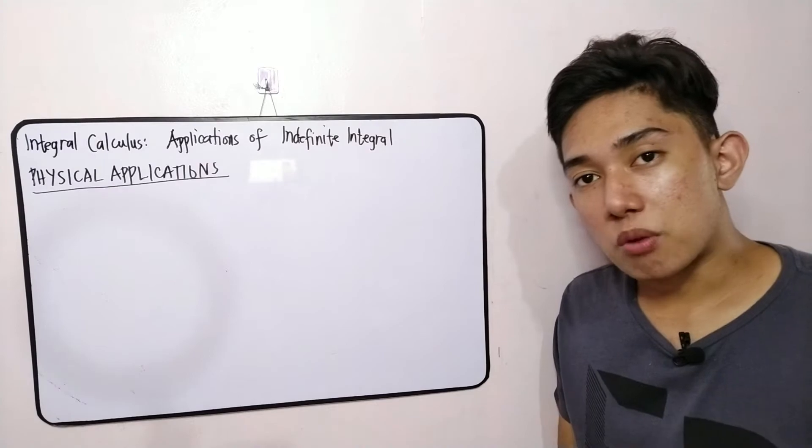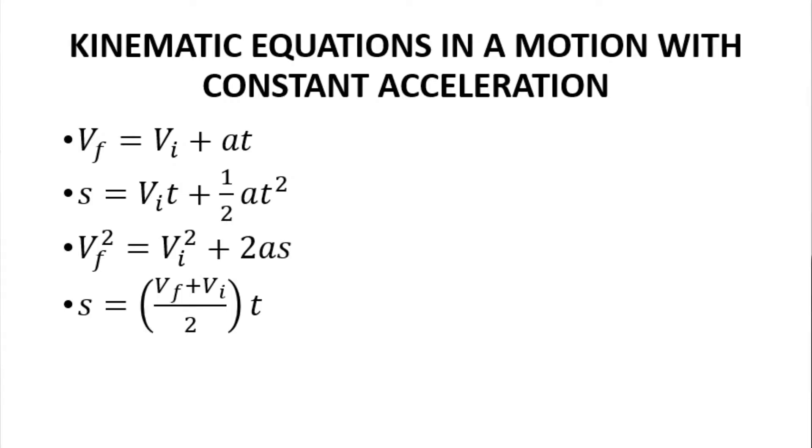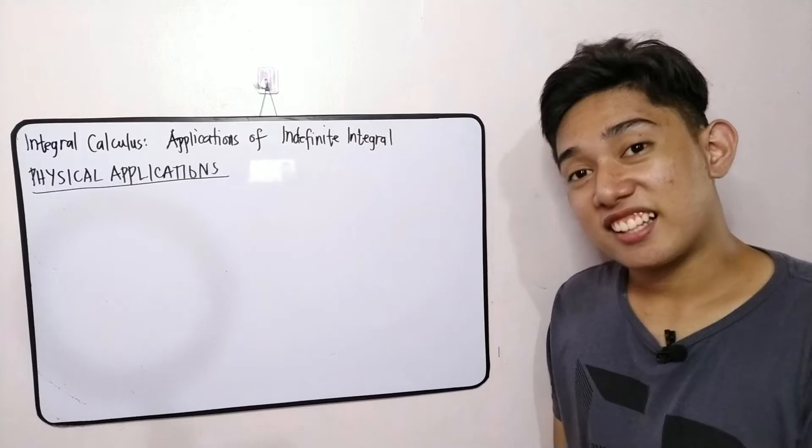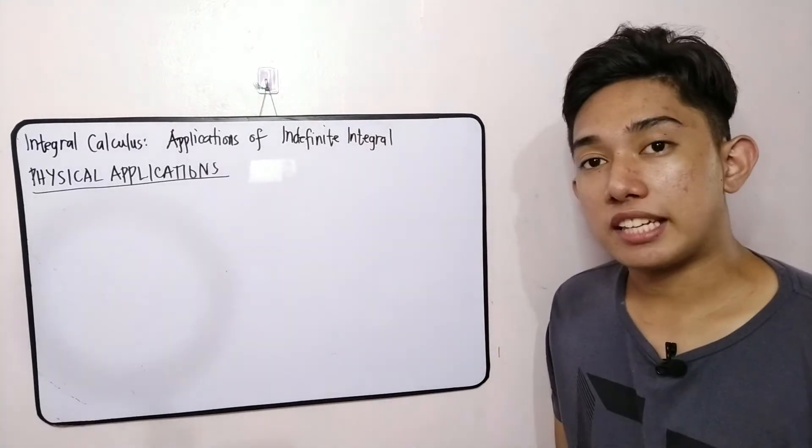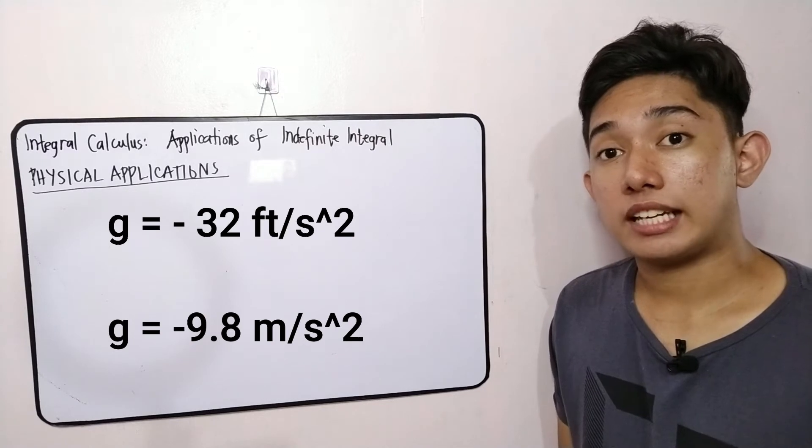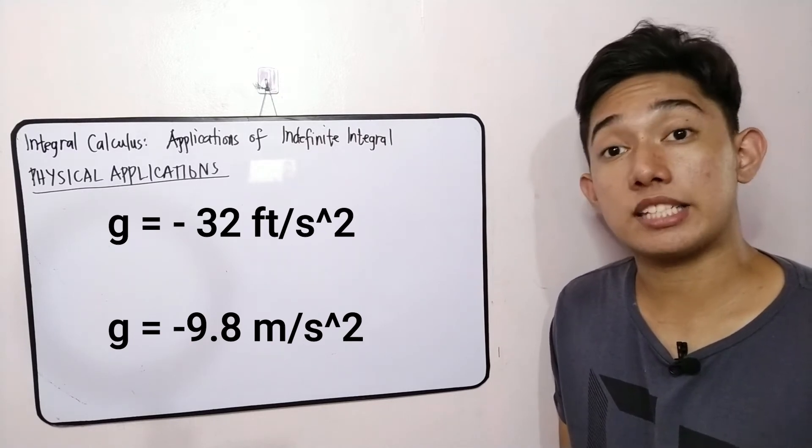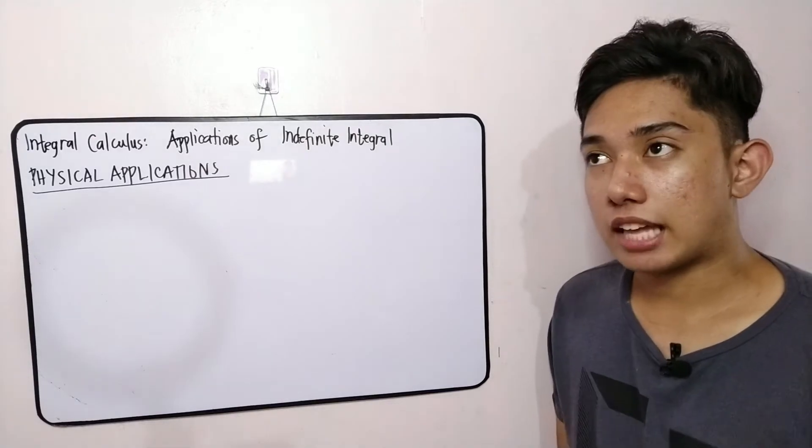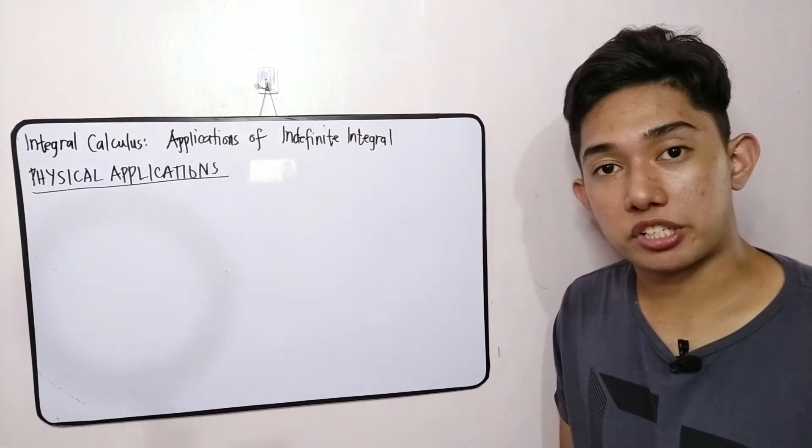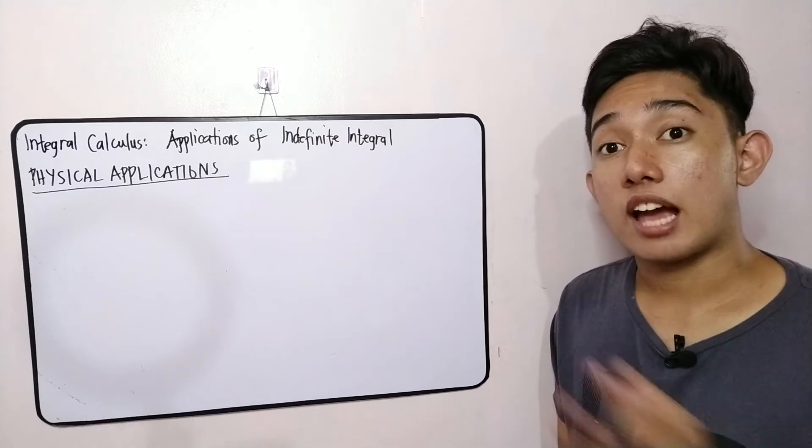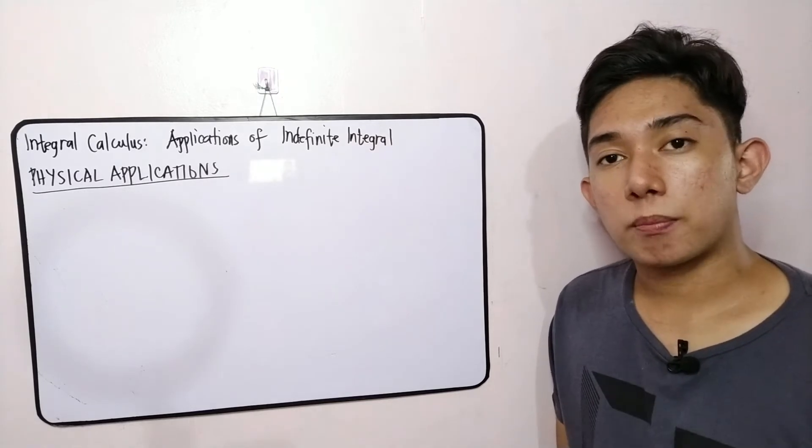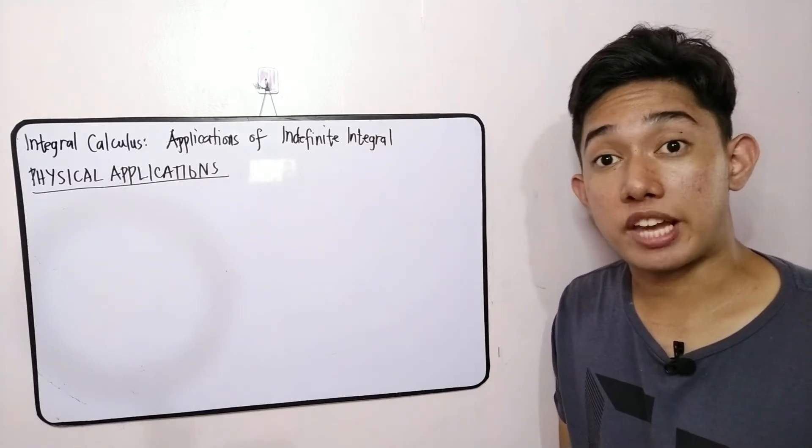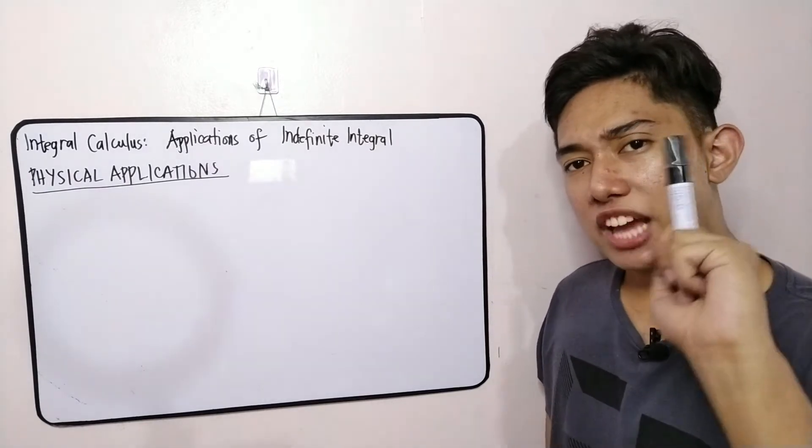We will recall our kinematic equations in our physics. Always remember that our acceleration here is constant to use that kinematic equations when you recall your physics. Then in free-fall cases, we will use 32 feet per square second in the sense that mas madali siyang isolve without using calculator. If we will use 9.8 meters per square second, another constant for the acceleration due to gravity, it will still be correct pero ibang conversion siya. For most of our problems, we will use feet per square second. Let's flash our first problem.